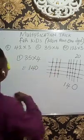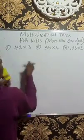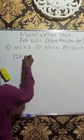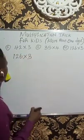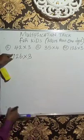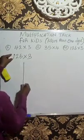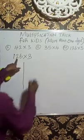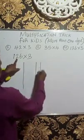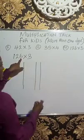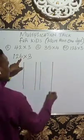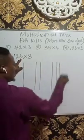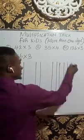So let's take the last one. The last one is 126 times 3. So 126, the first digit here is 1, so just draw 1 line. The next digit is 2. Give a space, draw 2 lines: 1, 2. The next digit is 6. Give another space and draw 6 lines: 1, 2, 3, 4, 5, and 6.